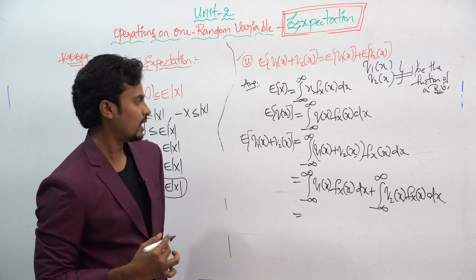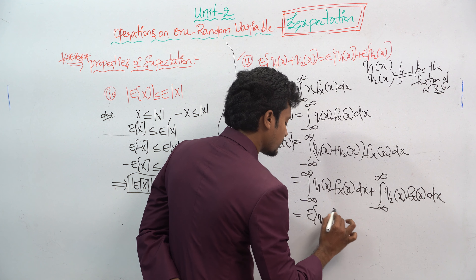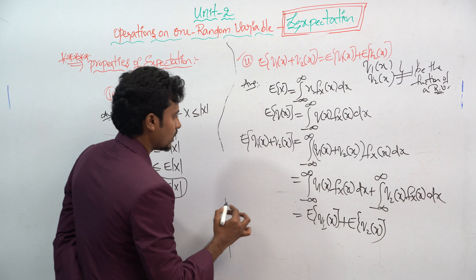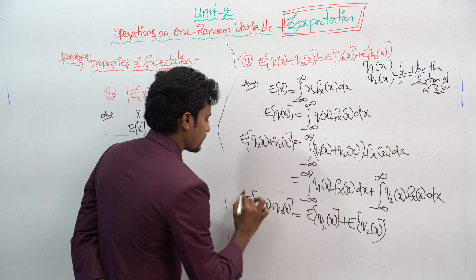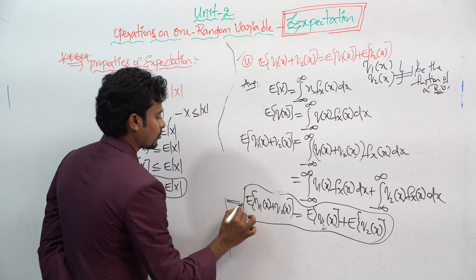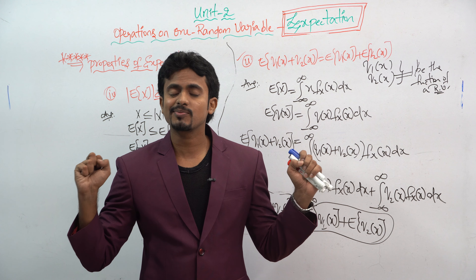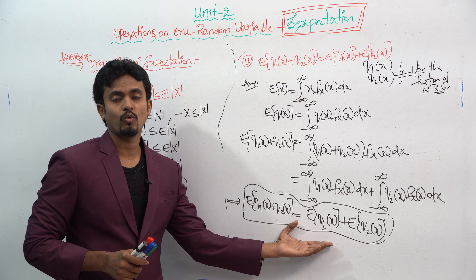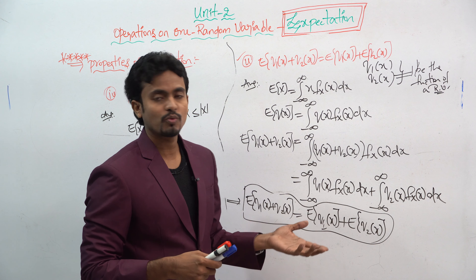Splitting the integral: integration from minus infinity to infinity of g1(x)·f(x) dx, plus integration from minus infinity to infinity of g2(x)·f(x) dx. The first integral is E(g1(x)) and the second is E(g2(x)), so this becomes E(g1(x)) + E(g2(x)). This is the final answer for this property.